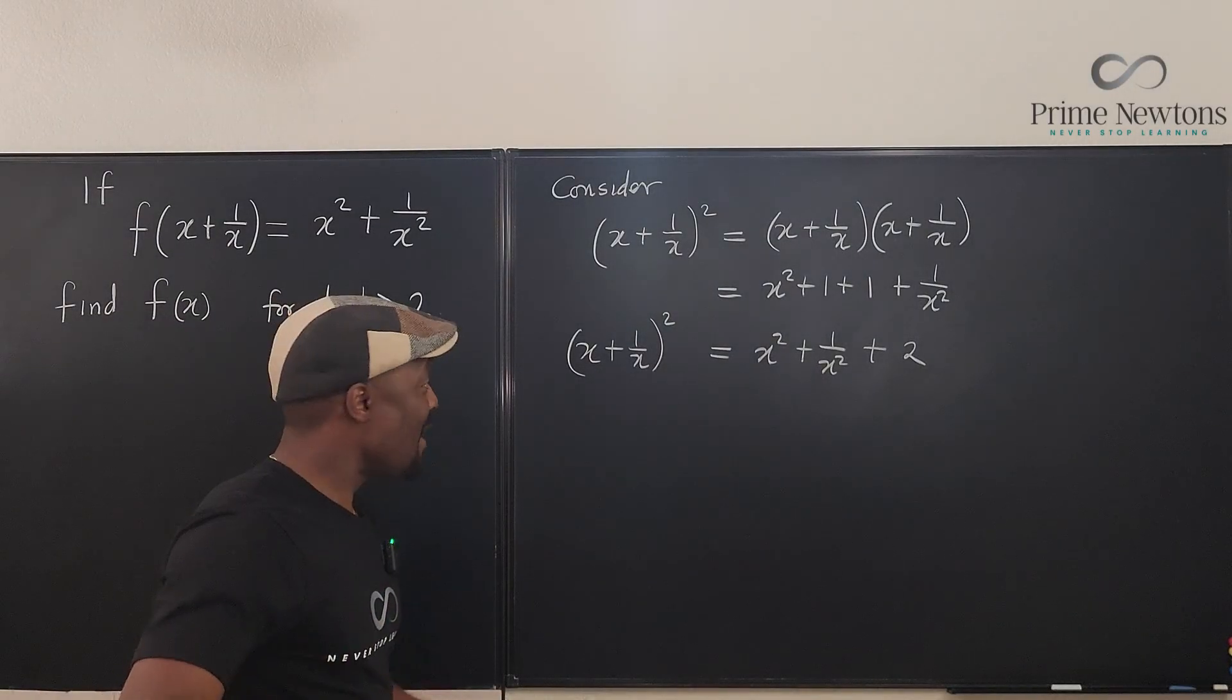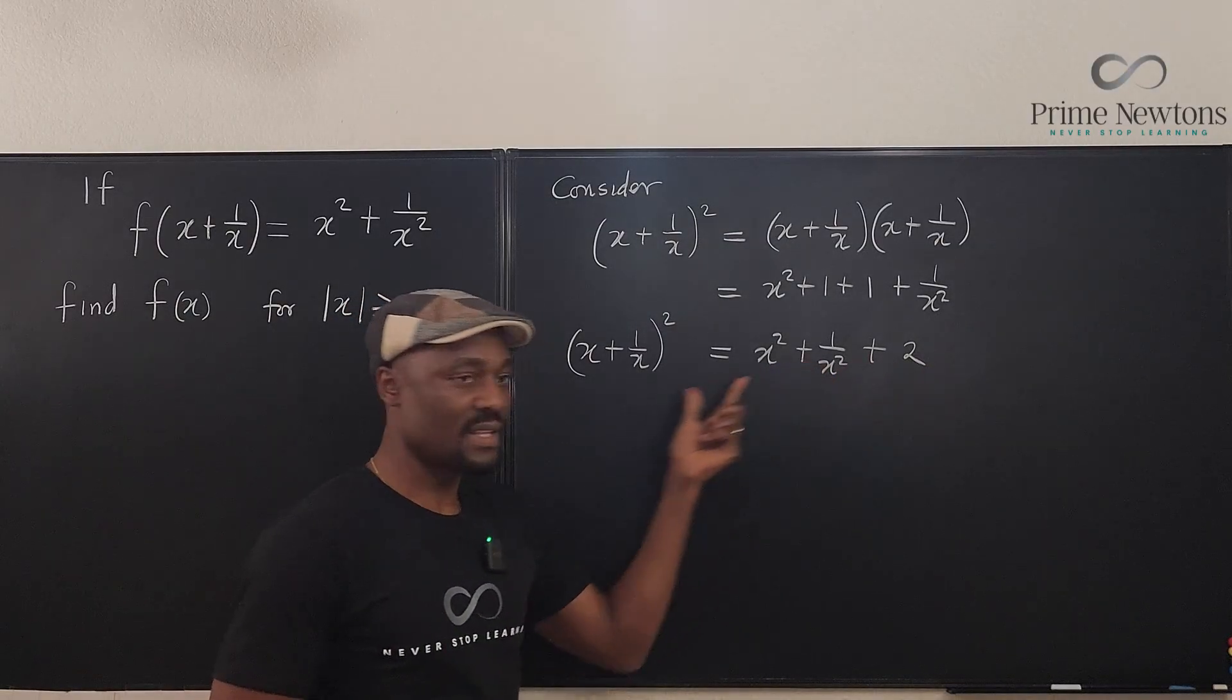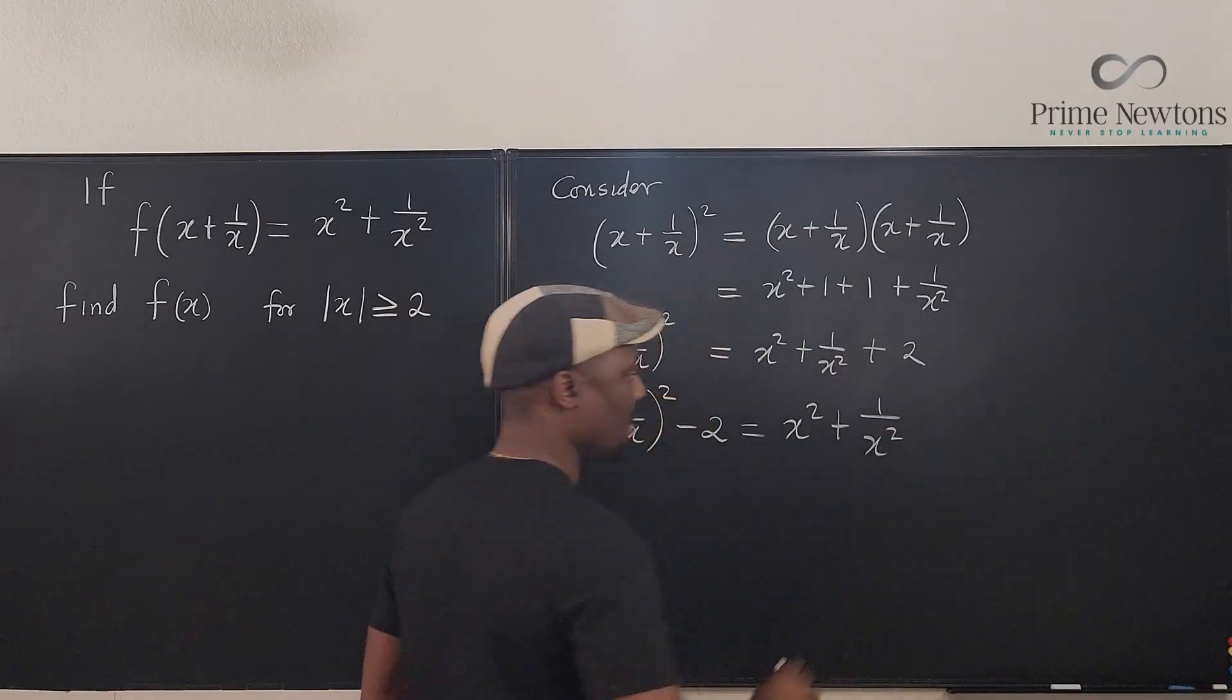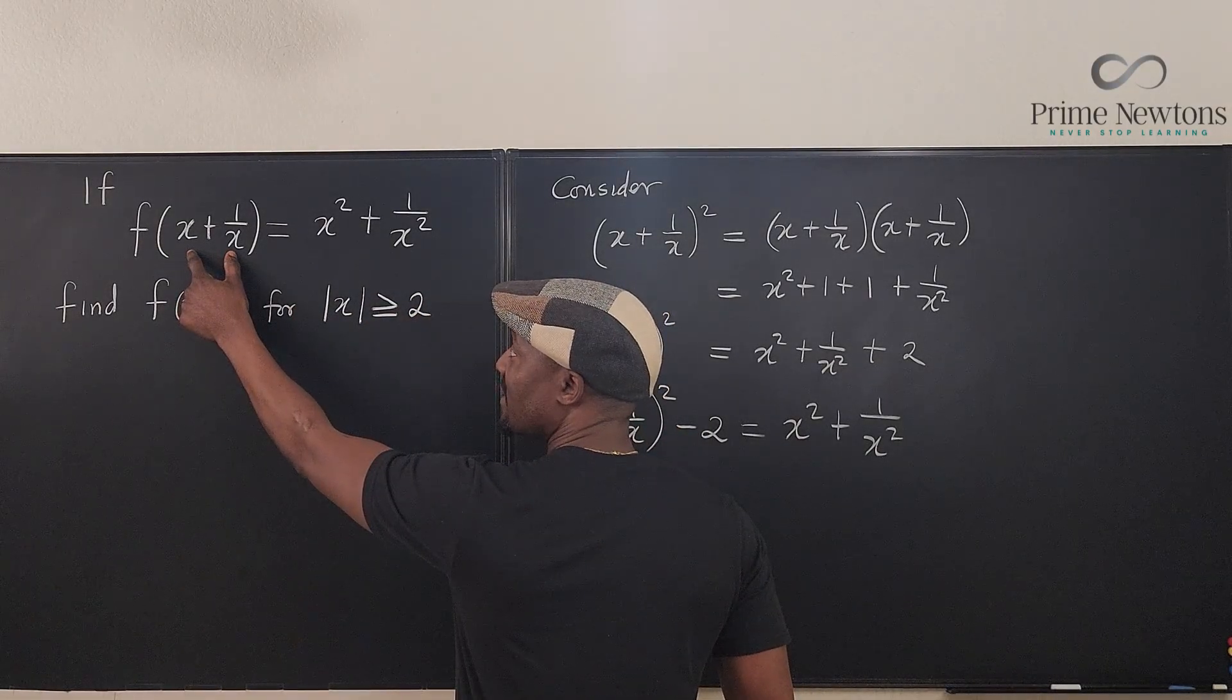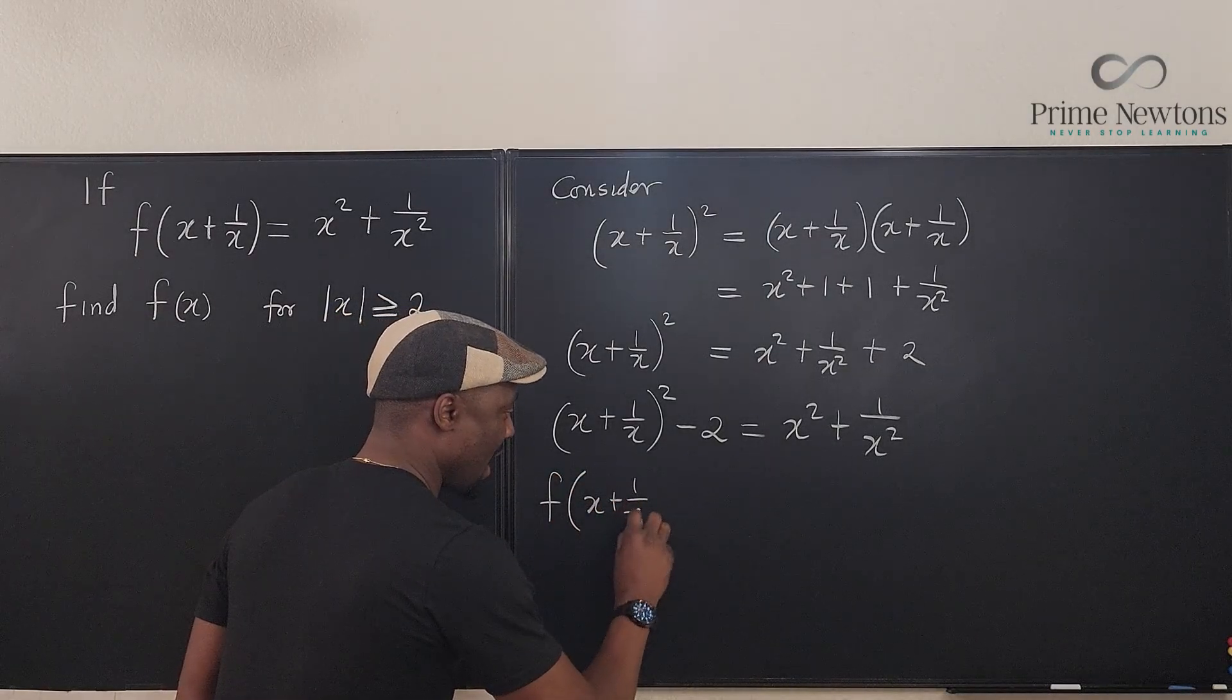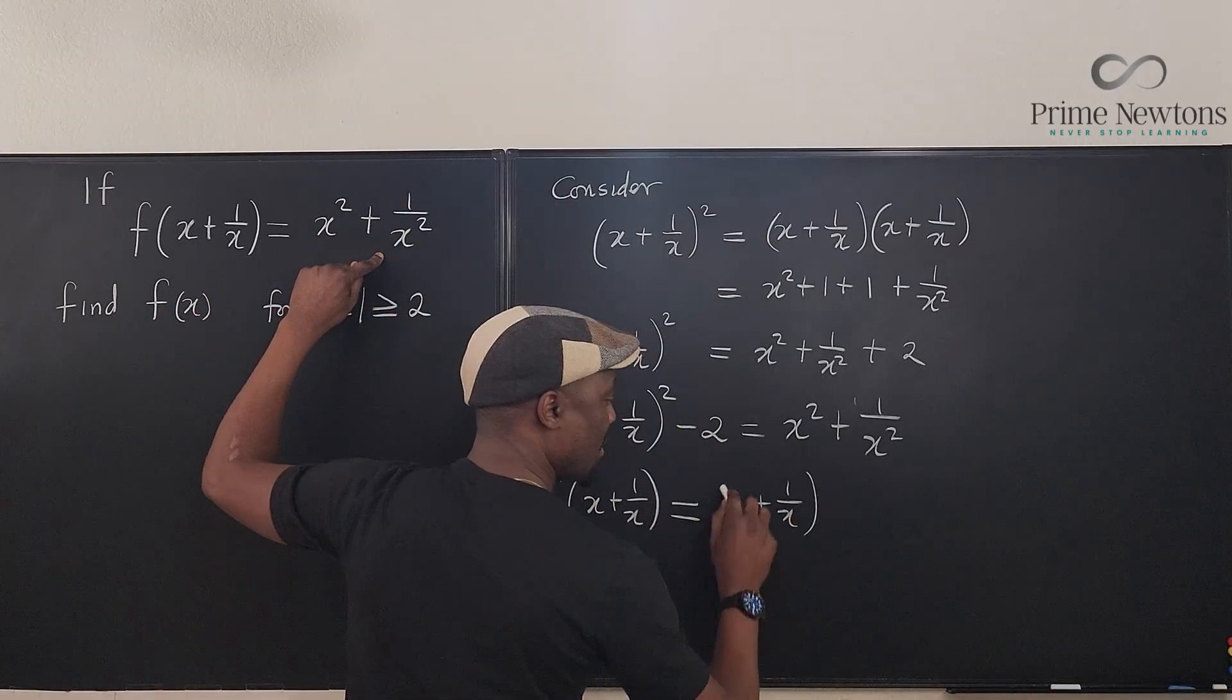So it means, if I go back to this function, I could actually say that f of x plus 1 over x is this. Well, let me just isolate this by moving this here. So I can say that x plus 1 over x squared minus 2 is equal to x squared plus 1 over x squared. I just moved this over here. That means when the argument is x plus 1 over x, the output is x plus 1 over x squared minus 2. That is this.